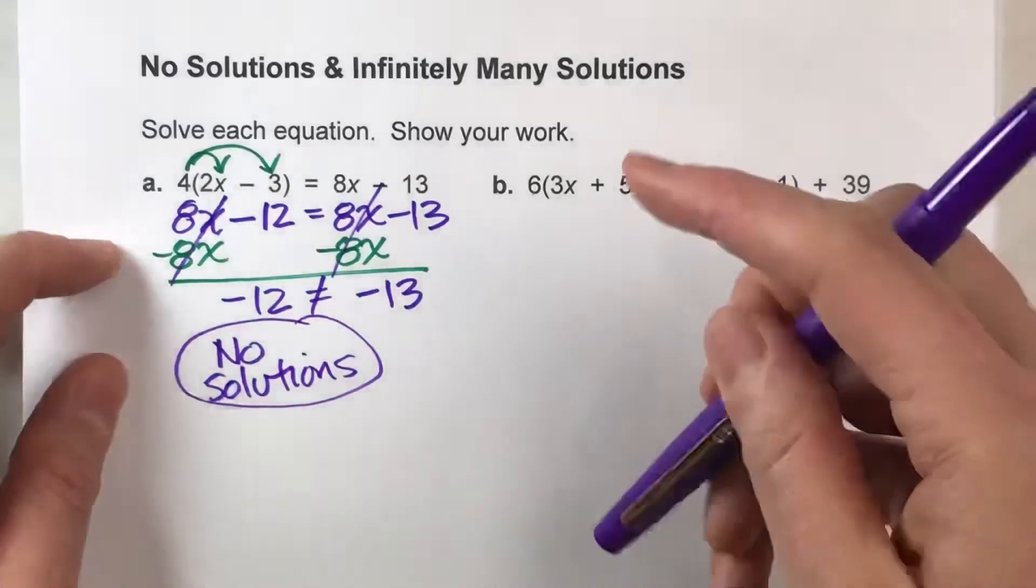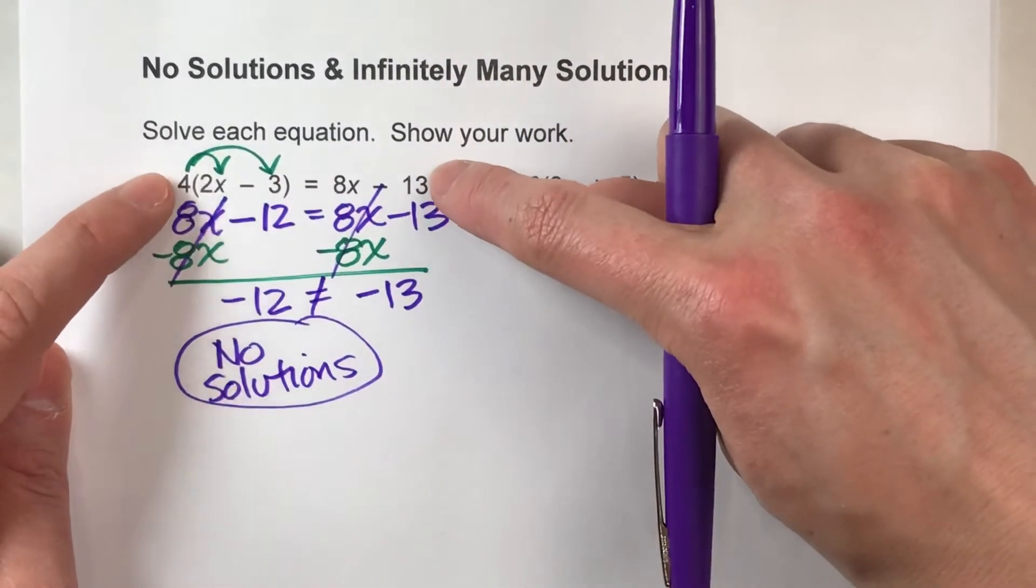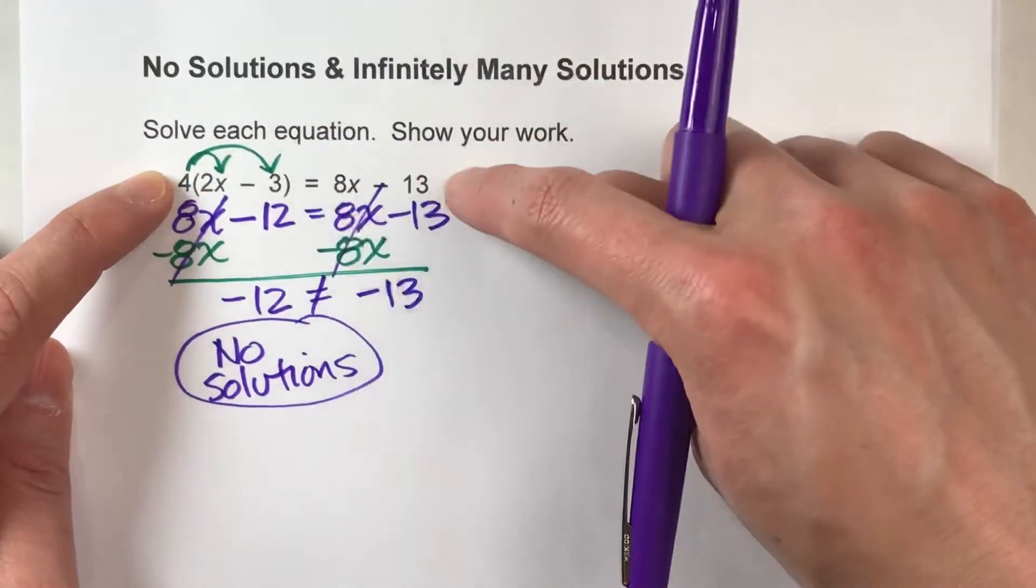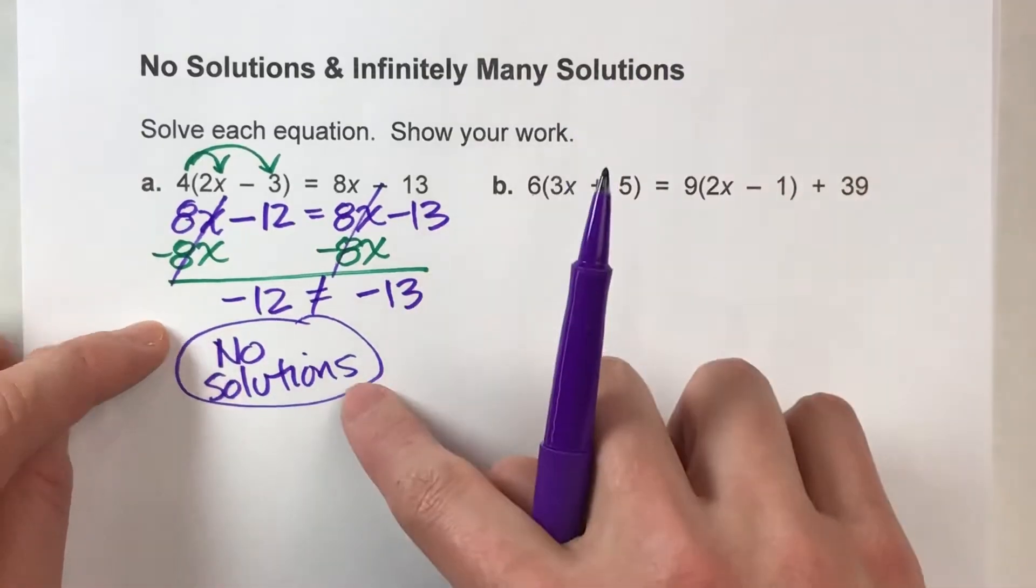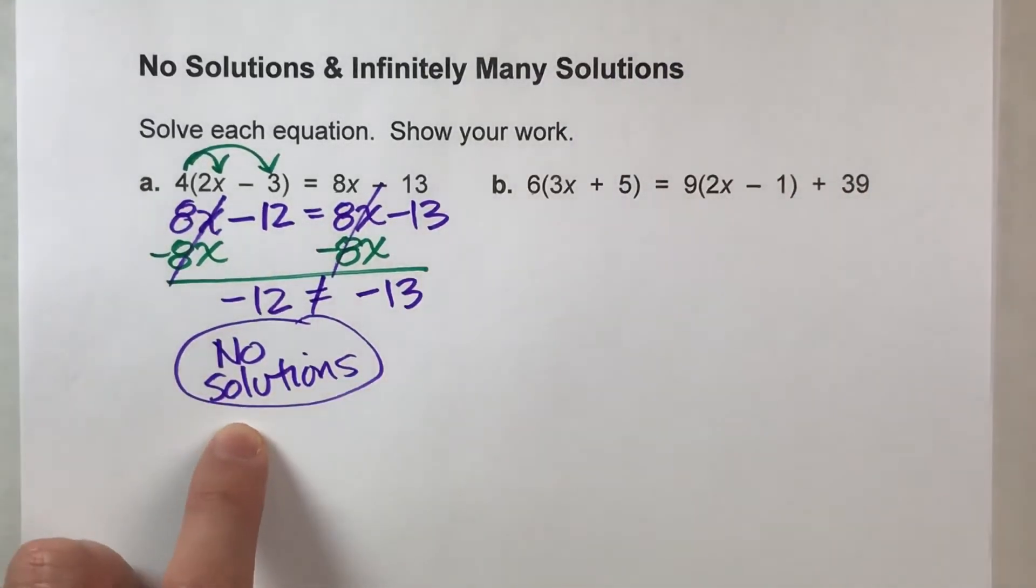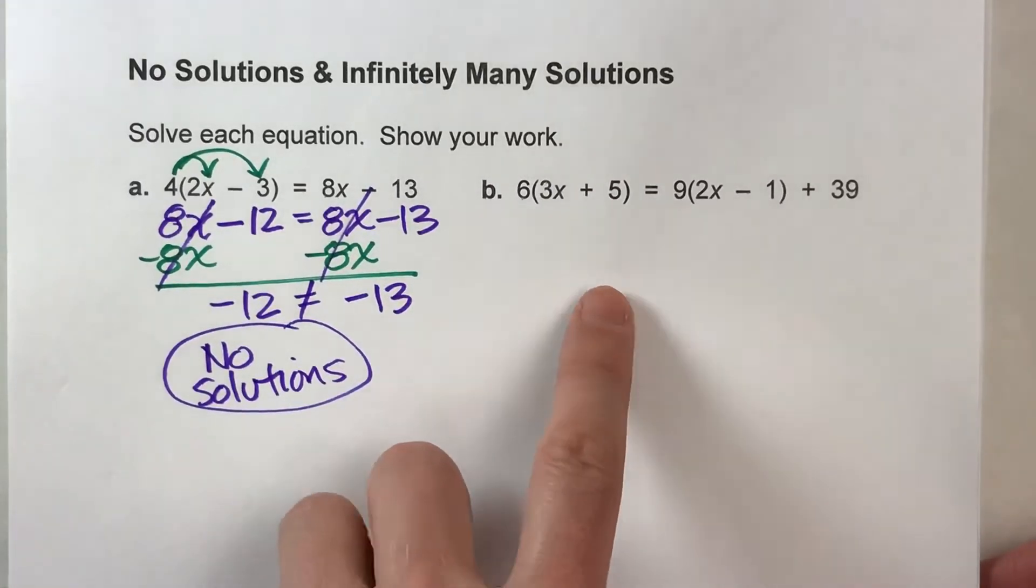Meaning, there is no possible value of x that you could put into this original equation to make this work. It's an impossible situation. That's what no solutions mean. There's no value of x that can make that work. So, let's go to the second one now.